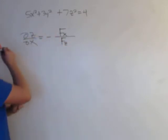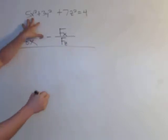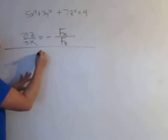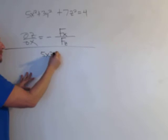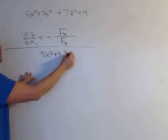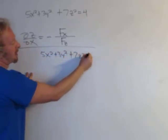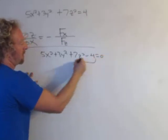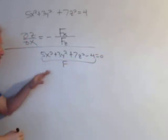So what is big F? Well first, you have to find big F. To find big F, you have to subtract the four. So 5x squared plus 3y squared plus 7z squared minus 4 equals zero. So that's your big F in the formula.